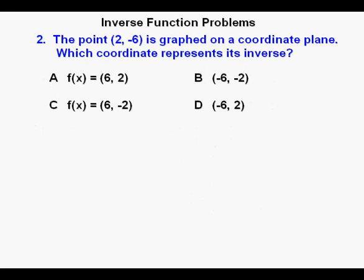Inverse function problem two. The point (2, -6) is graphed on a coordinate plane. Which coordinate represents its inverse? There are different ways to do this problem as well, but probably the easiest way to do this is to take the original point (2, -6) and just switch the position of the x and y coordinates.